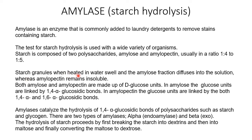When starch granules are heated in water, they swell and the amylose fraction diffuses into the solution — that means it gets dissolved — whereas amylopectin remains insoluble. Both amylose and amylopectin are made up of D-glucose units. In amylose, the glucose units are linked by 1,4 alpha-glucosidic bonds.